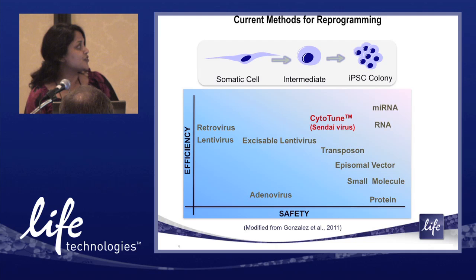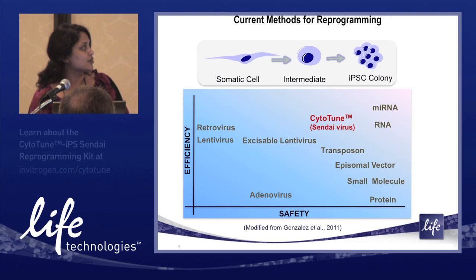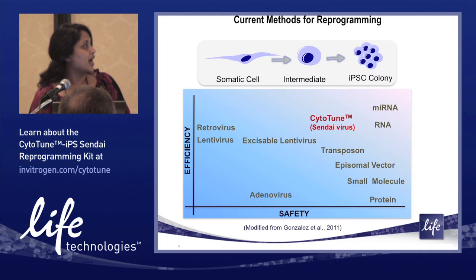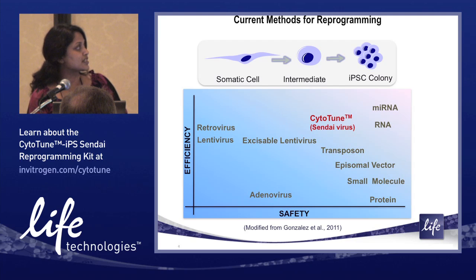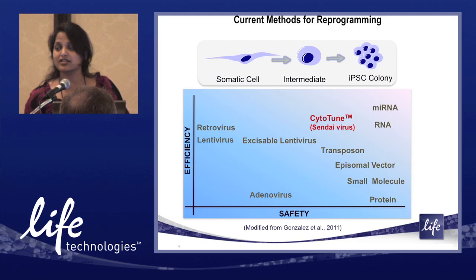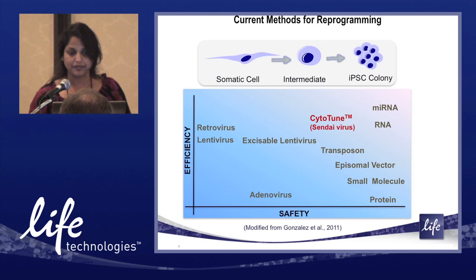The highest efficiency so far has been obtained with viral methods such as Lenti and Retro. More recently, the CytoTune system actually exceeds the efficiency you can get with these traditional viral systems. At the same time, it's relatively much safer because it's an RNA virus and non-integrating, and therefore will not leave a footprint in the genome of the cells or iPSCs created.